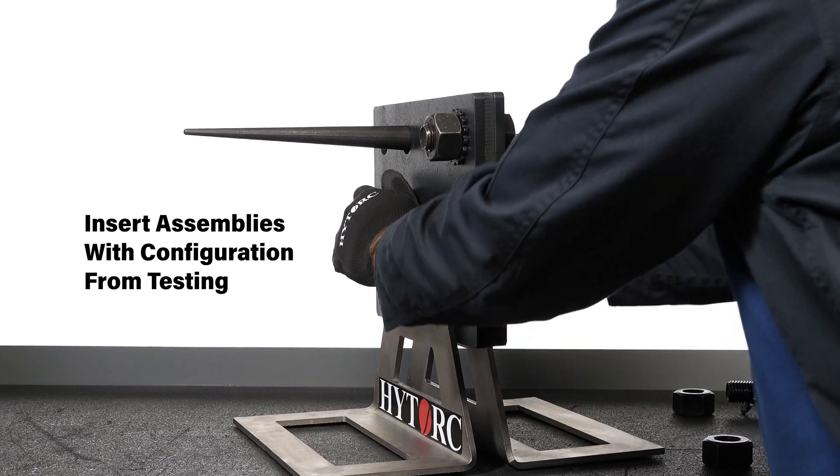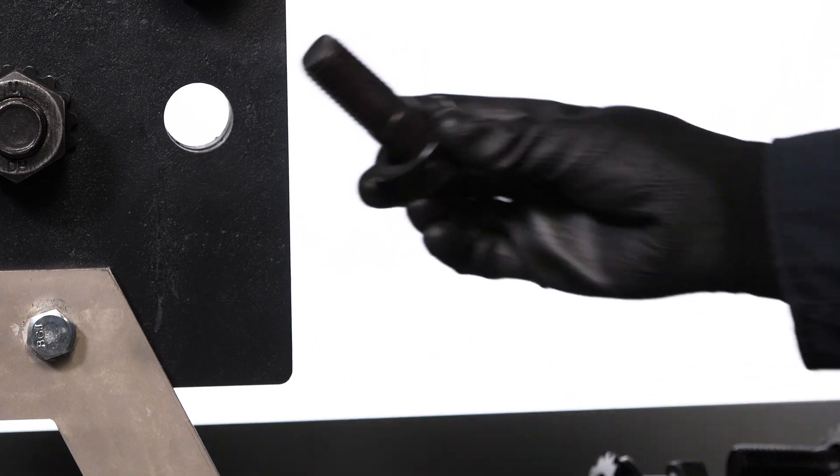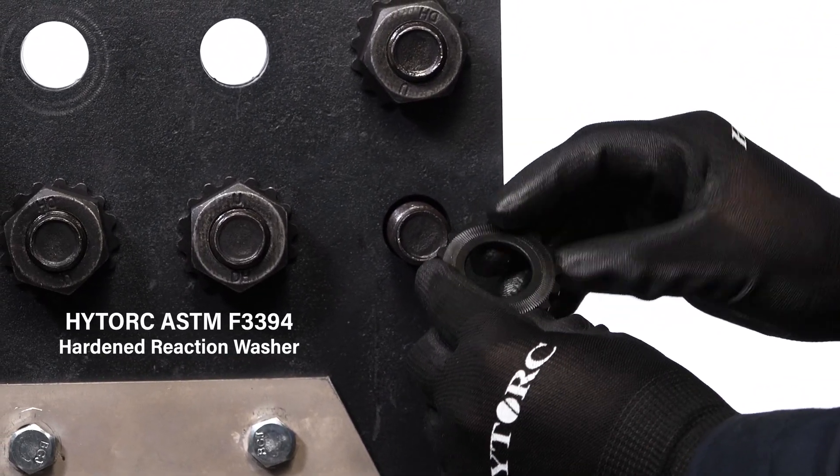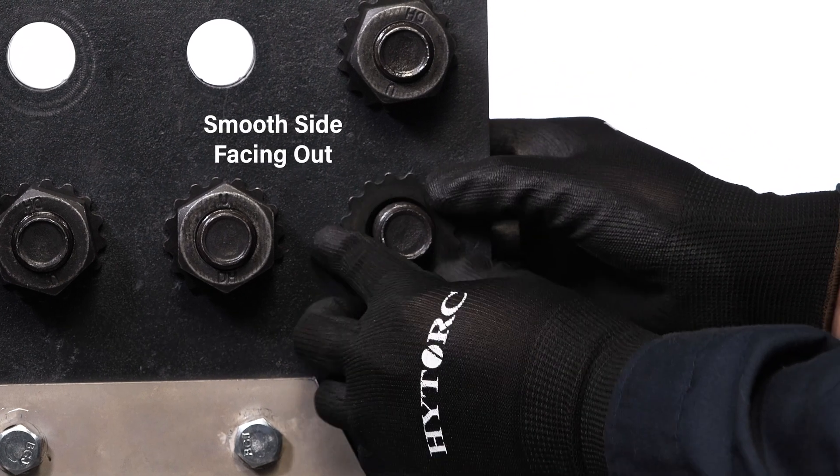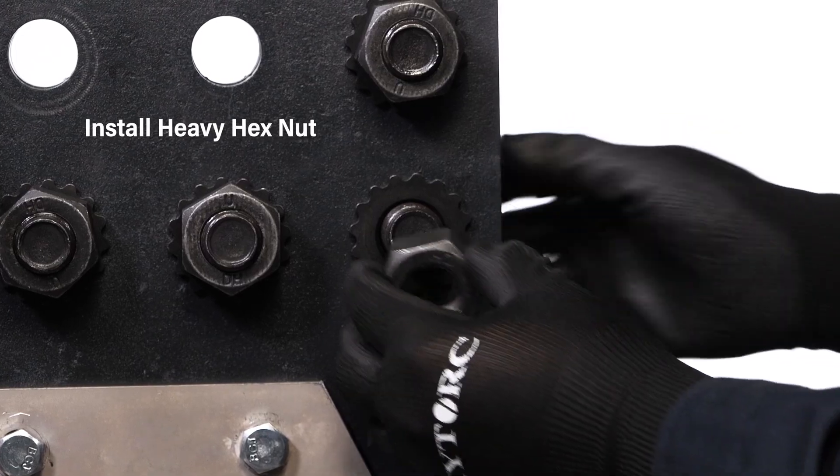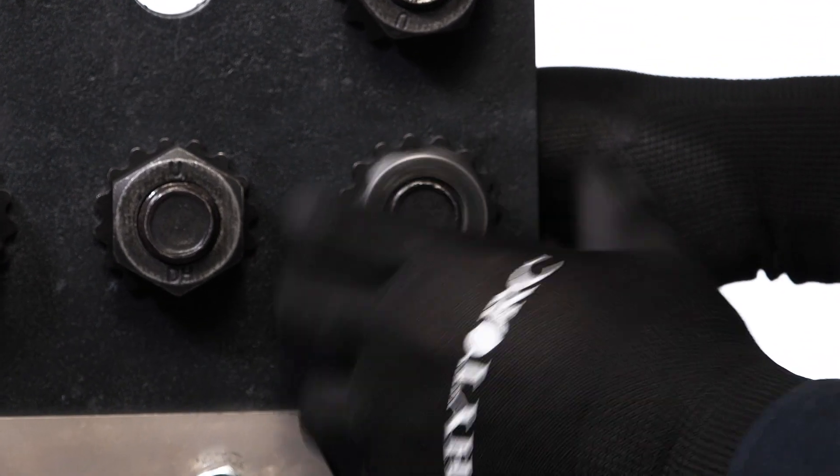Insert bolts through the steel plies and out the other side. Place a high-torque ASTM F3394 hardened reaction washer on each bolt with the smooth side facing out and the serrations facing the steel work. Install a heavy hex nut with the manufacturer markings facing outward to complete the assembly.